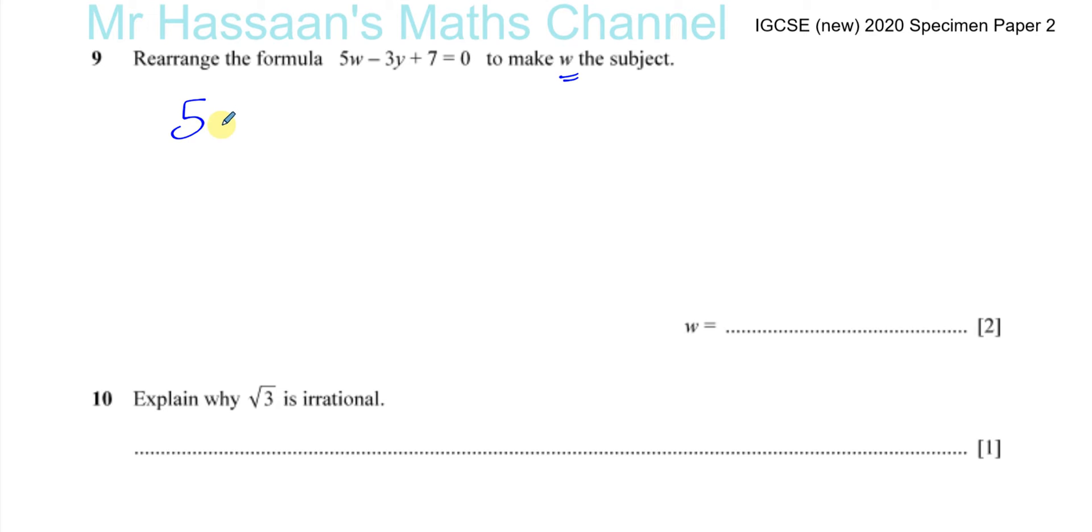So you have 5w minus 3y plus 7 equals 0. Okay, so I want to keep the w term positive, so I'll keep the w term on this side.